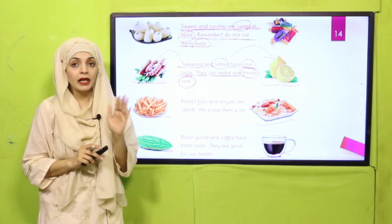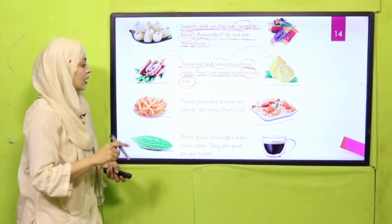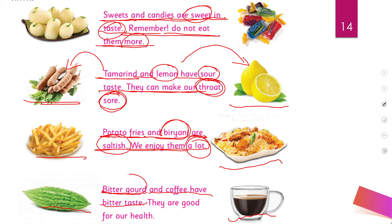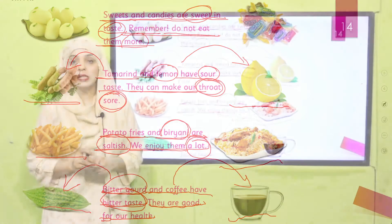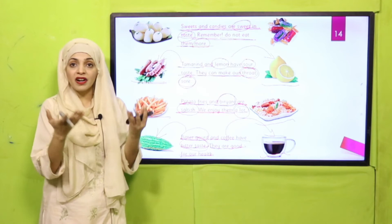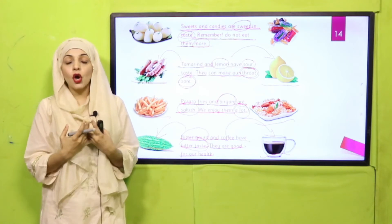Potato fries and biryani are saltish — we enjoy them a lot. Bitter gourd and coffee have bitter taste. They are good for our health. So karela and coffee have bitter taste, but they are very good for our health.